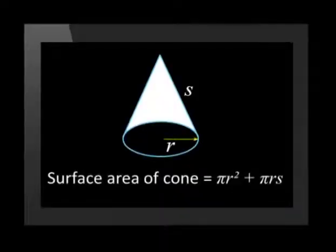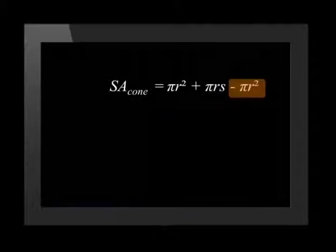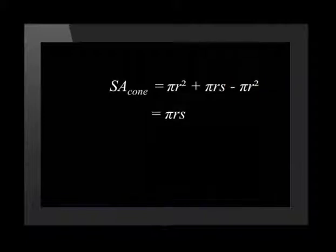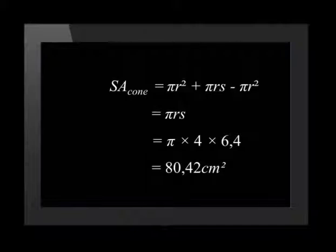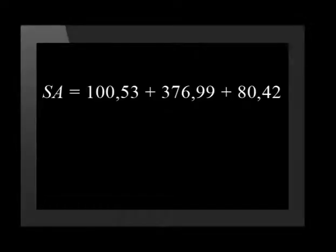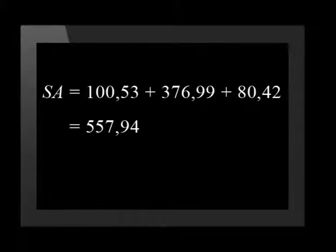Lastly, let's calculate the surface area of the cone. The surface area of a cone is equal to pi r squared plus pi times r times s, where s is the length of the side of the cone. We need to subtract the circle at the base, which gives us a formula of pi r times s. We substitute in the given values for the radius and the side of the cone, and this works out to be 80.42 centimeters squared. Our last step is to find the sum of these values and round off to the nearest unit: 100.53 plus 376.99 plus 80.42 equals 557.94, which rounds off to 558 centimeters squared.